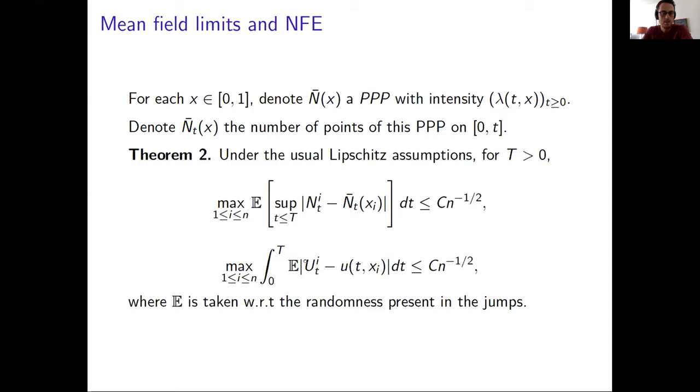And from this type of result, we can also show that if I look for each neuron, I compare the evolution of the membrane potential of neuron i with the Neural Field Equation. If you look at the L1 distance for each neuron, this also goes to zero as n goes to infinity. And here, the expectation is taking with respect to the randomness present in the jumps. So this is somehow a much better description than just the law of large numbers that we saw before.